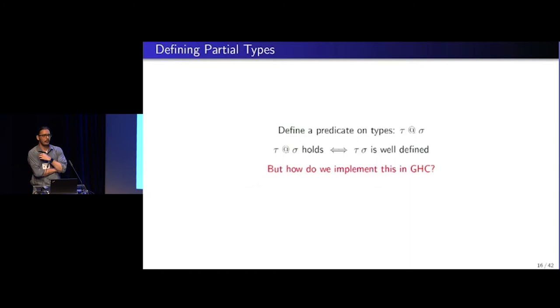And we don't have dependent Haskell, right? I don't know if Richard is here. And I'm kind of impatient. I want to have this feature right now. Like, I don't want to wait until dependent Haskell comes in. So how do we implement this in current GHC?